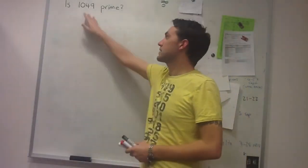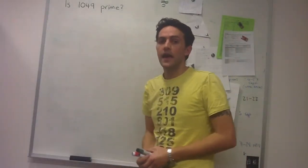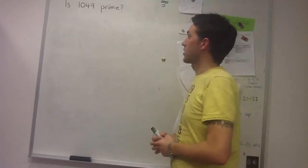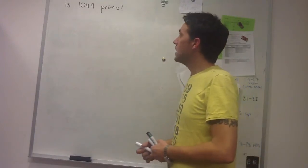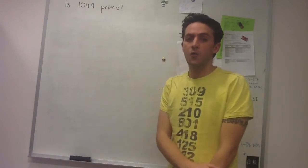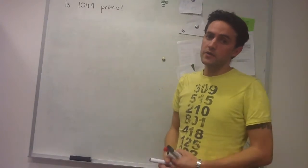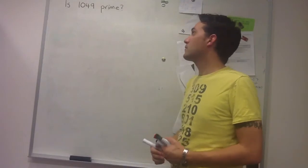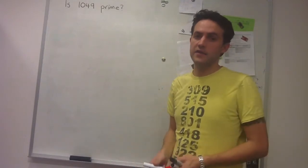In this worked example, we're going to look at the number 1049 and see if we can tell whether it's prime or not. Remember, a number is prime if its only factors are 1 and itself. So when we're looking at 1049, we're basically asking, does it have any other factors?